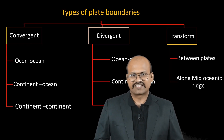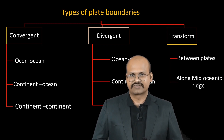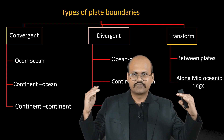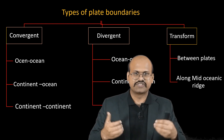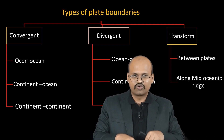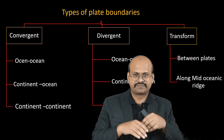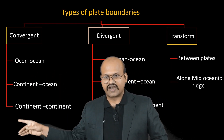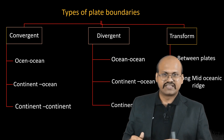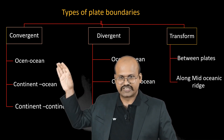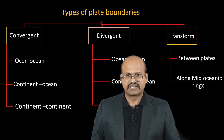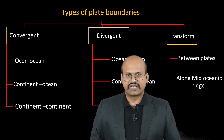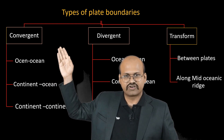There exist three types of boundaries based on plate movement: convergent boundaries where two plates move towards each other, divergent boundaries where two plates move away from each other, and transform boundaries where two plates move parallel to each other. There is a separate video discussing each of these boundaries in detail. Here we will have a quick overview of what structures exist at each of these boundaries.